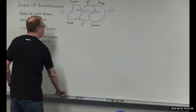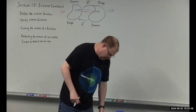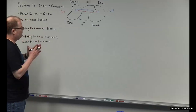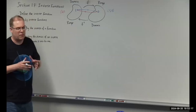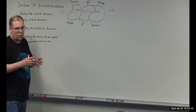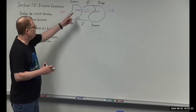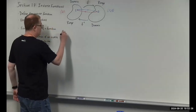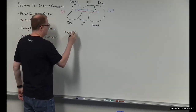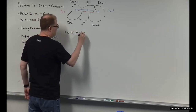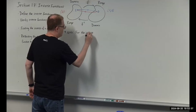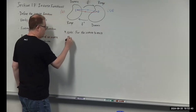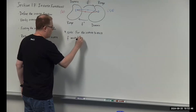That's going to be one of the key insights for finding the inverse of a function. In order for the inverse to exist, the original function has to be one-to-one. So for the inverse to exist, F must be one-to-one.